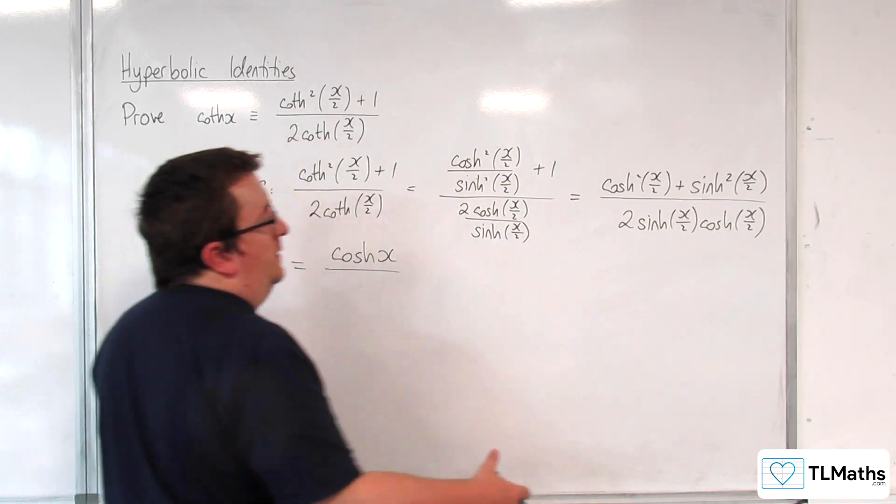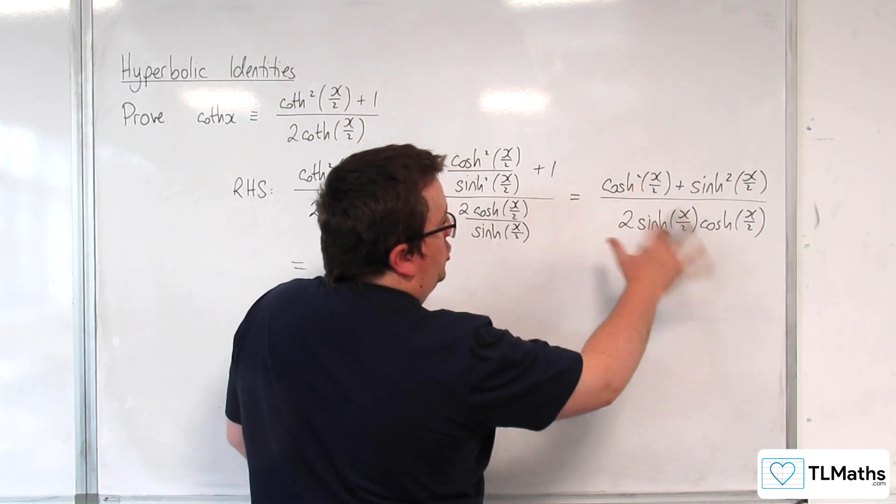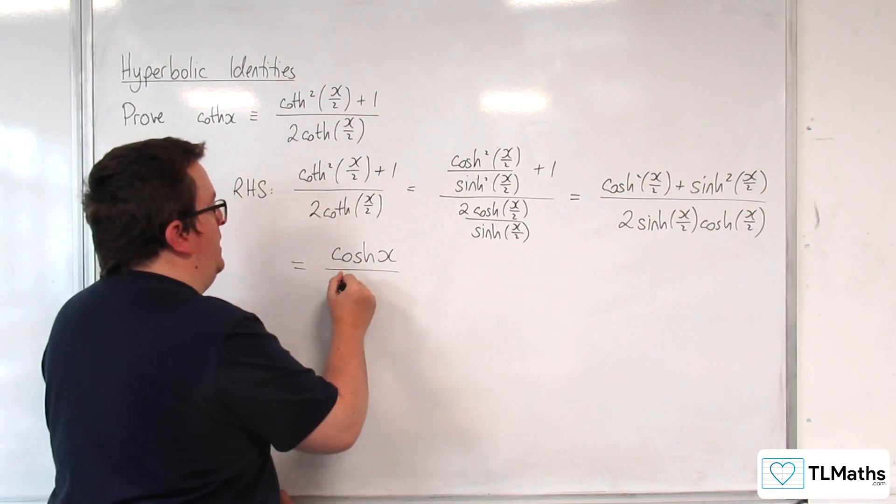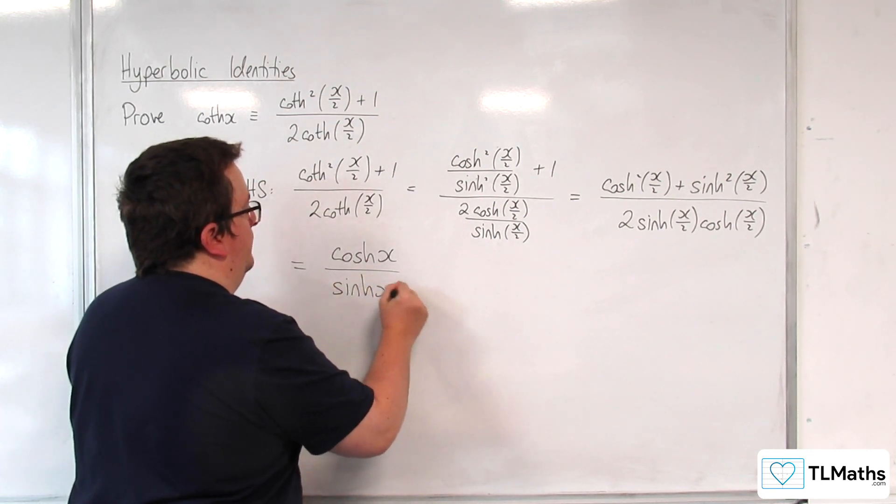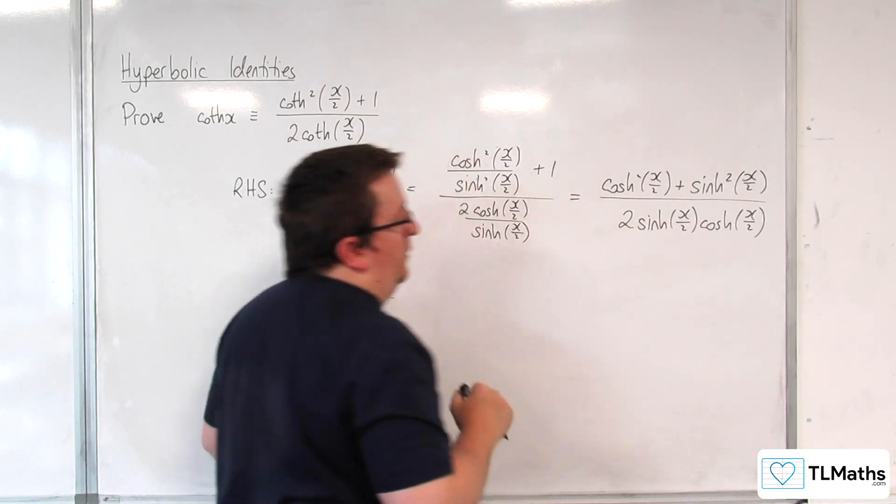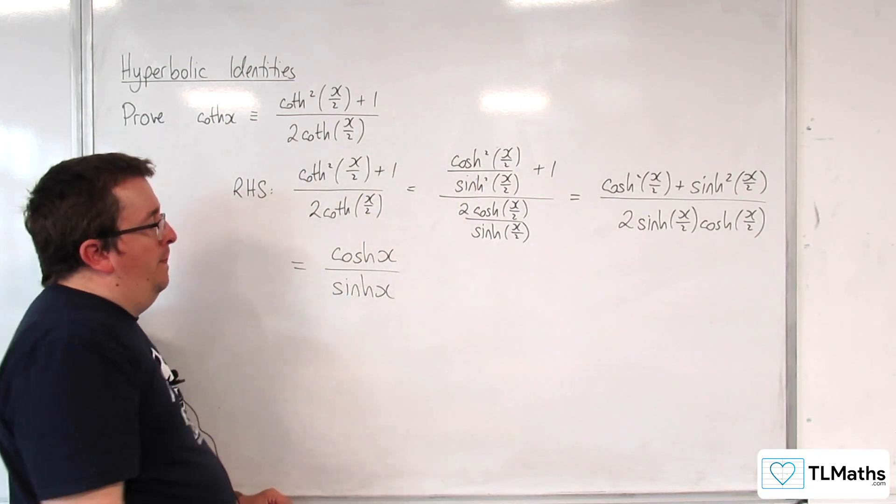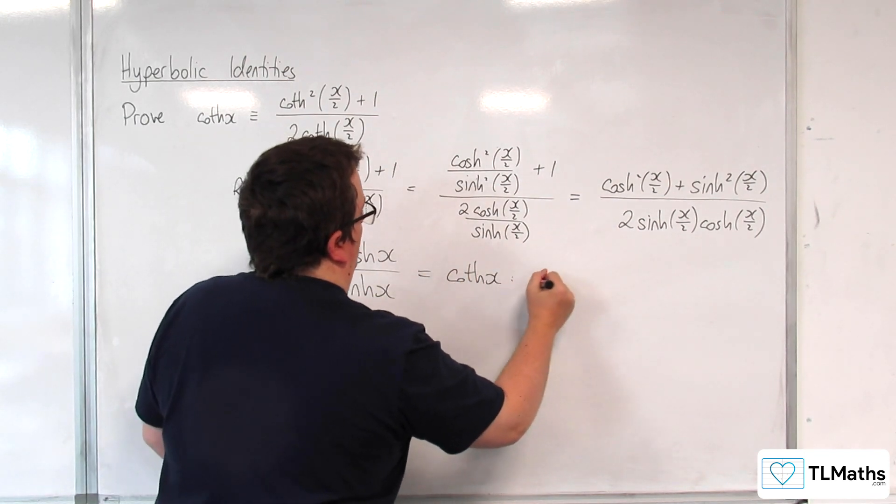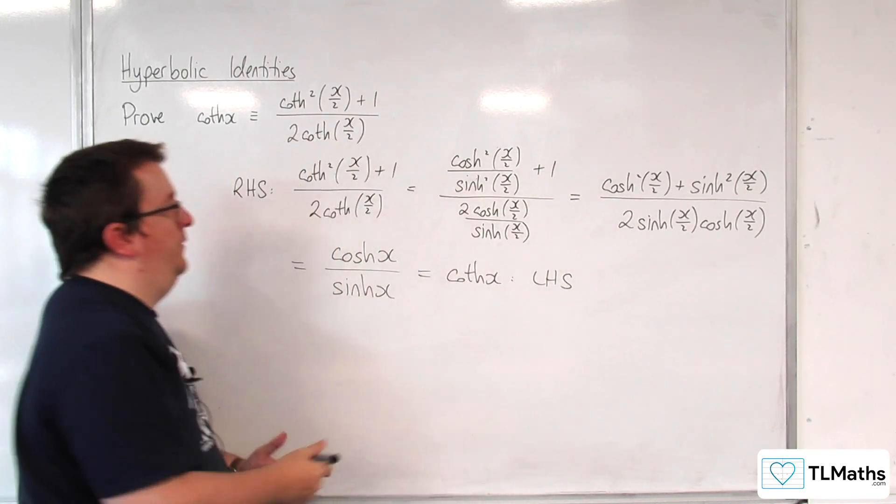And in the denominator, we've got, well, 2 sinh x cosh x would be sinh of 2x. So sinh of x is 2 sinh of x over 2 cosh of x over 2. And cosh over sinh is coth, which was our left-hand side.